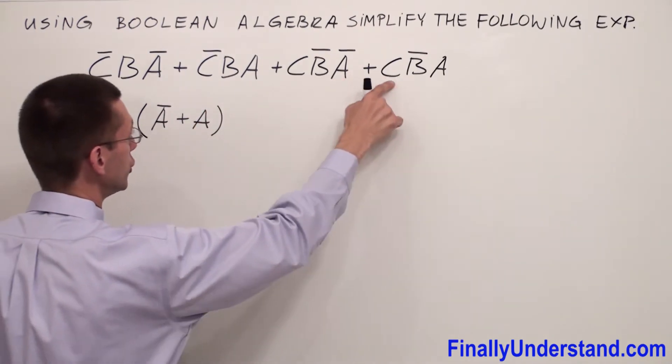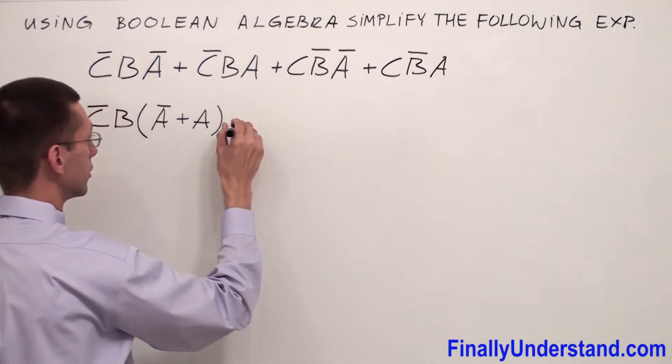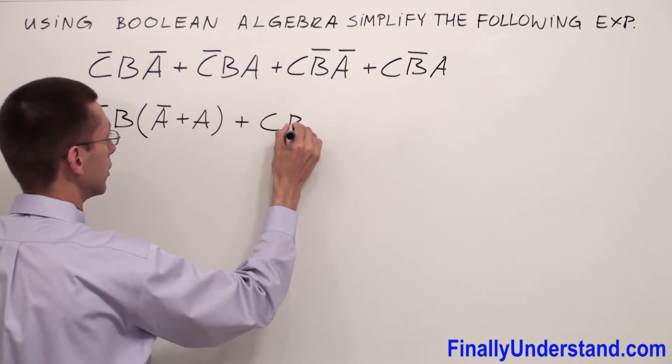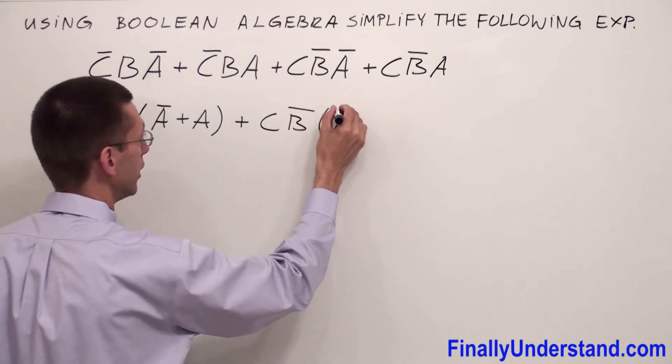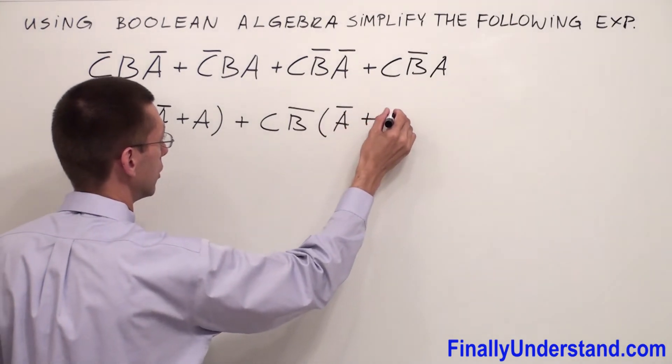From these two terms I can factorize C̄B and inside of the parentheses I'm going to have Ā or A.